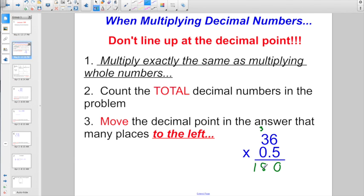We only worry about the decimal point at the very end. Now, what's the total number of decimal digits I have in the whole problem? Only 1. That 5 is the only number behind a decimal point. So I'm going to go ahead and move the decimal point over one place to the left. And I ended up with 18 and 0 tenths. But what did we remember about simplifying decimal numbers? I don't need to have 18 and 0 tenths. I can just call that plain old 18.